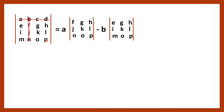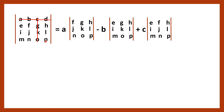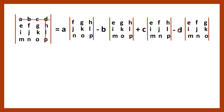After that, the next element C is considered. Since the second element was negative, the next is positive: plus C. Removing the row and column in which C lies, the remaining elements are E, F, H, I, J, L, M, N, P. So the third term is plus C into the determinant of E, F, H, I, J, L, M, N, P. The last element D is assigned a minus sign: minus D. Removing its row and column, the remaining elements are E, F, G, I, J, K, M, N, O. So the fourth term is minus D into the determinant of E, F, G, I, J, K, M, N, O.